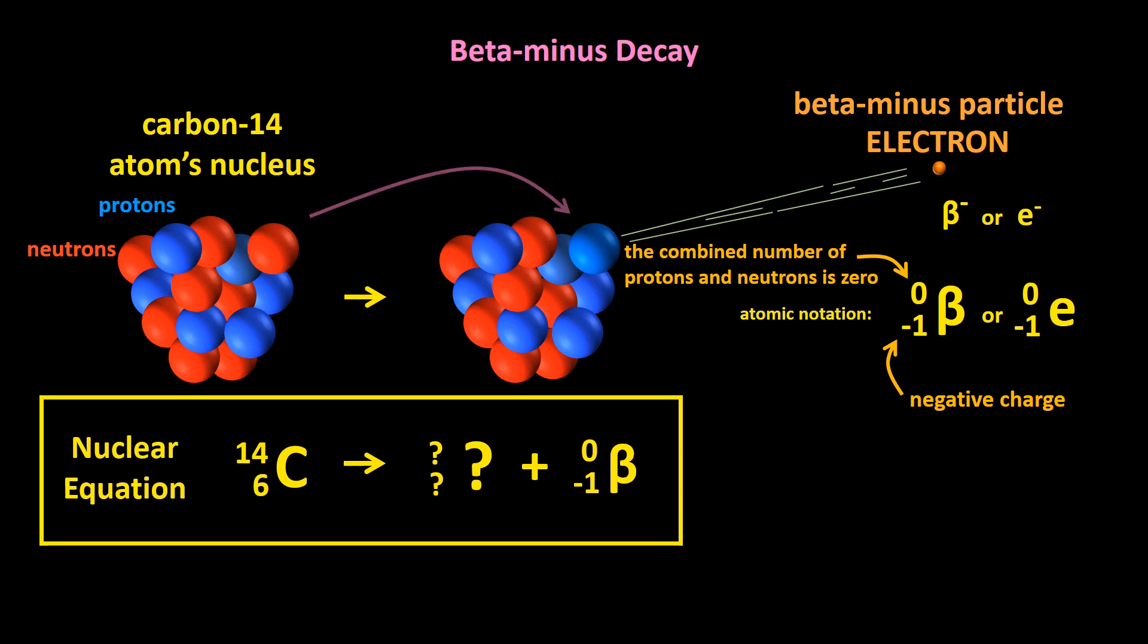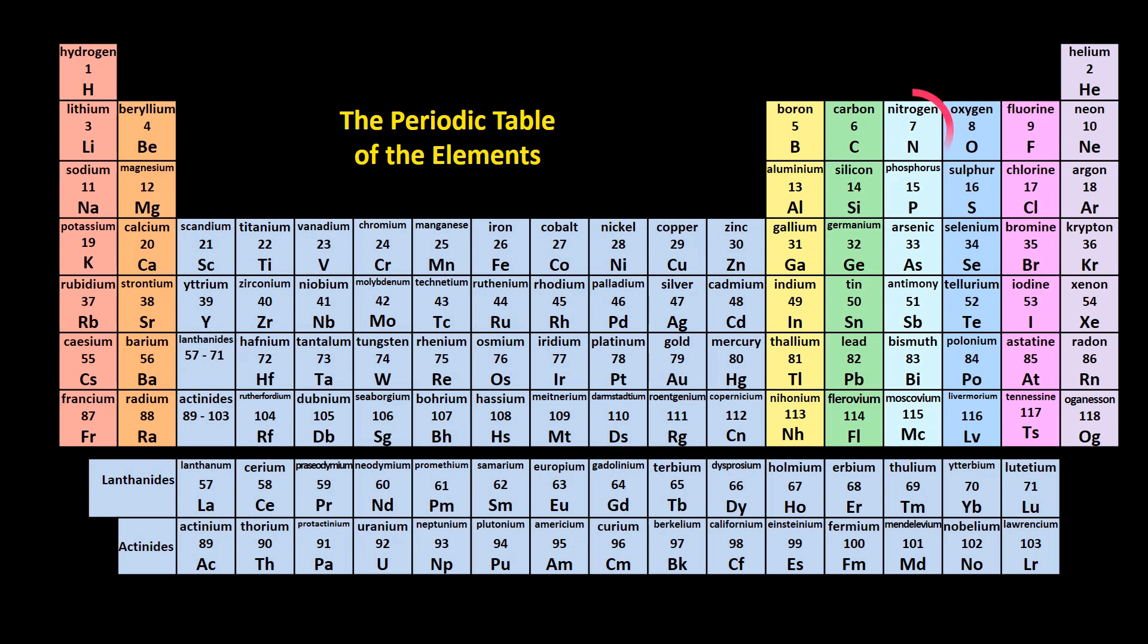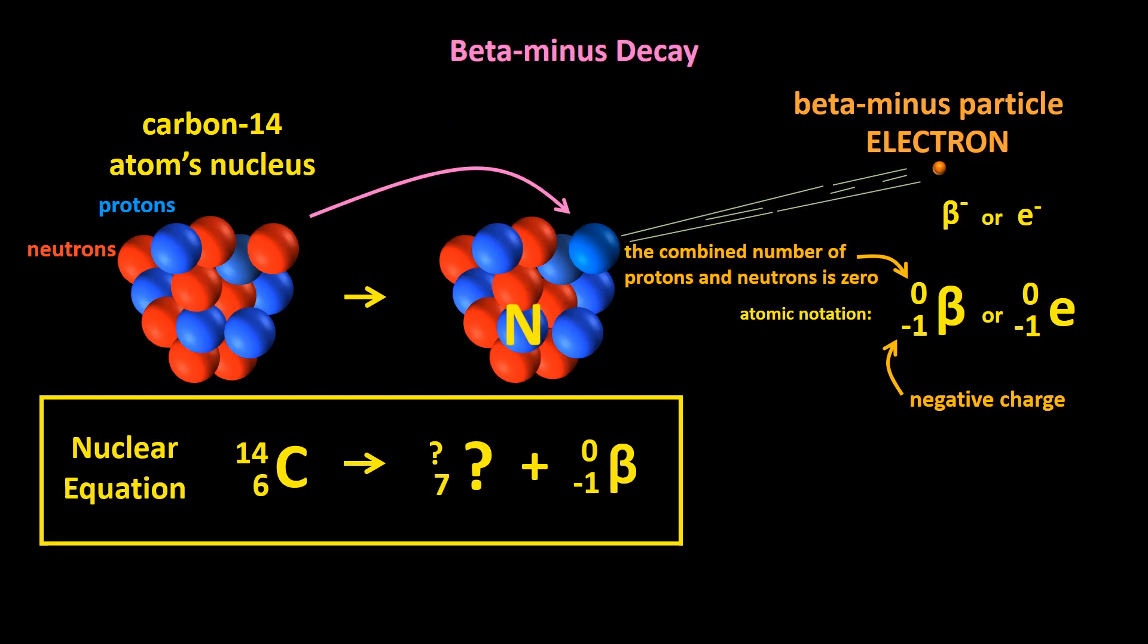One of the neutrons has turned into a proton, so the nucleus now has one more proton than it had originally. Instead of 6, it's got 7. And what type of an atom has 7 protons? If we look at the periodic table, we can see that it's a nitrogen atom. We can now write in an N. Now the combined number of protons and neutrons is still the same, so we can write 14 here.